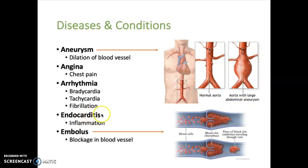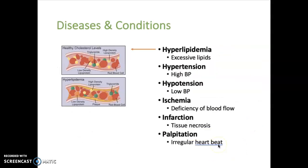Endocarditis — since "itis" means inflammation — is inflammation of the endocardium, the inner lining of the heart. An embolus or embolism is a mass, usually a blood clot, that becomes lodged in a blood vessel. Hyperlipidemia is excessive lipids in the blood. Hypertension is high blood pressure, and hypotension means low blood pressure. Ischemia is a temporary deficiency of blood flow to a tissue, which can sometimes lead to an infarction — localized tissue death or necrosis due to a lack of blood.